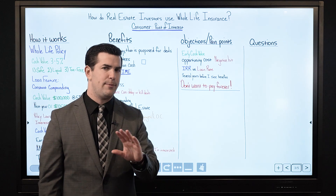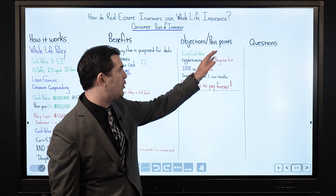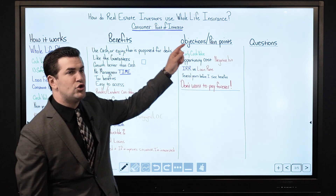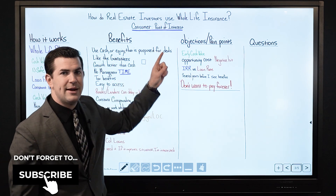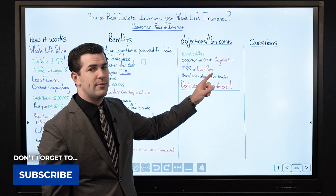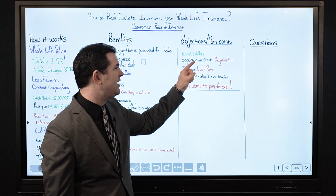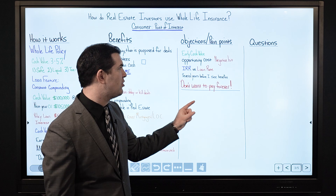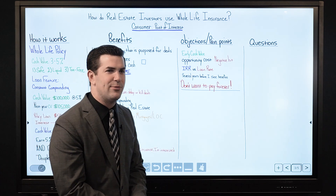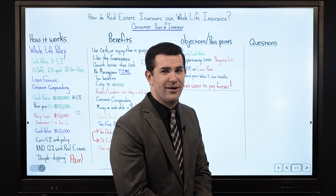The objection or pain point we hear is the lack of early cash value. The consumer's point of interest is maximizing cash value from start to finish — seeing more upfront. I've seen so many people attracted to that even more than the long-term. With all that said, if you design a policy properly, you'll have maximum cash value upfront and long-term.